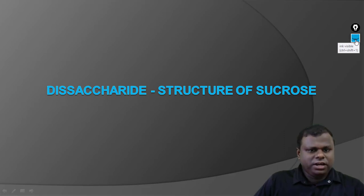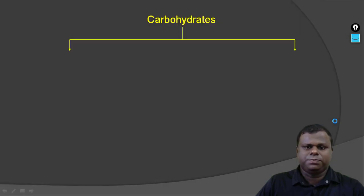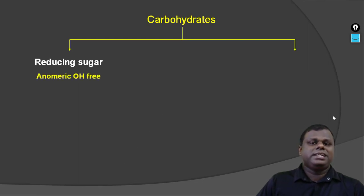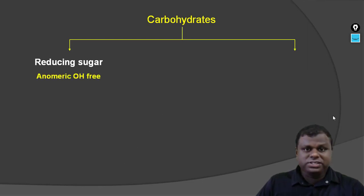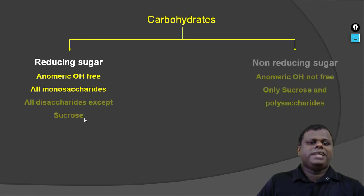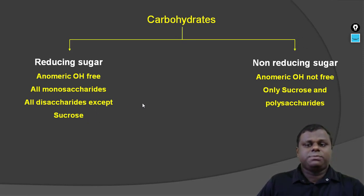So here we go — we have the structure of sucrose. We already know that sugars are basically two types: reducing and non-reducing, which we studied in the previous video. In the case of reducing sugar, the anomeric OH is free and all monosaccharides are reducing. All disaccharides are reducing except sucrose.